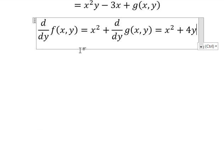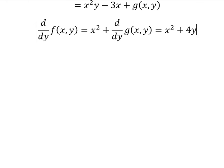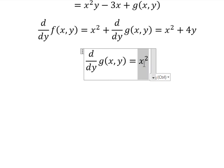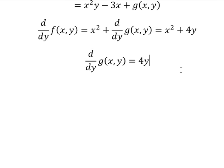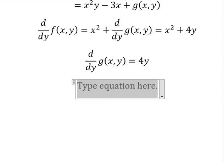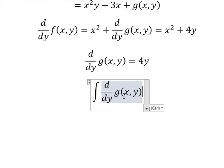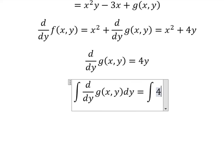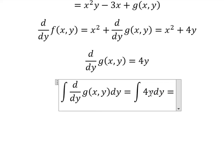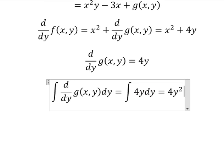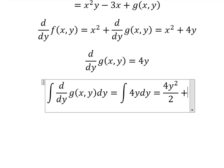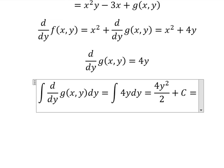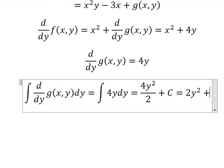Now we need to simplify x squared from both sides. And we just have only 4y. We put the integration for both sides. The integration of y, we have 4y squared over 2. And I will put about c. And now we have 2y squared plus c.